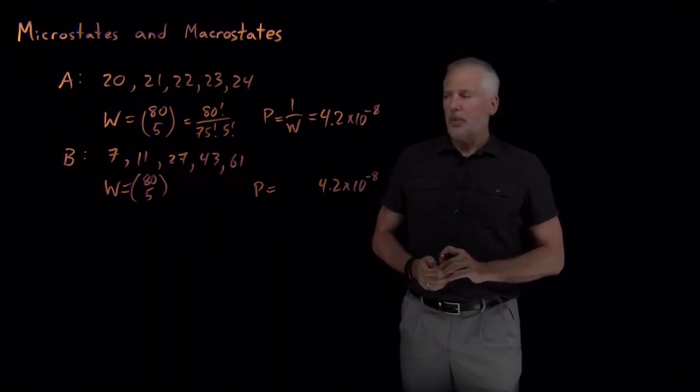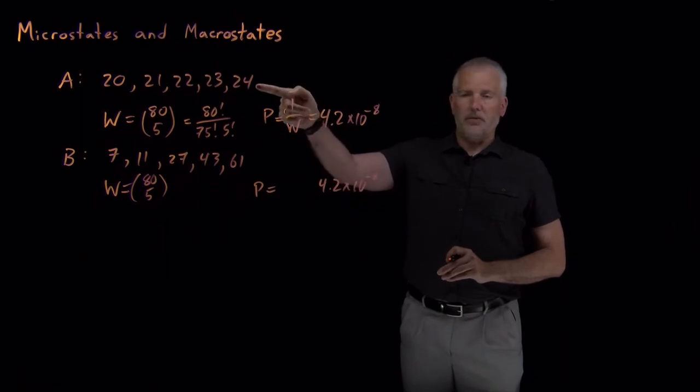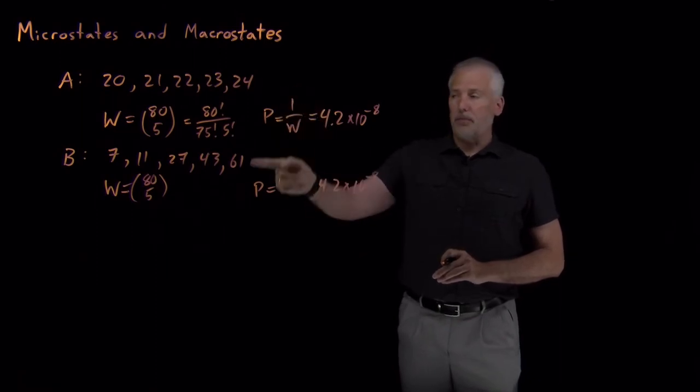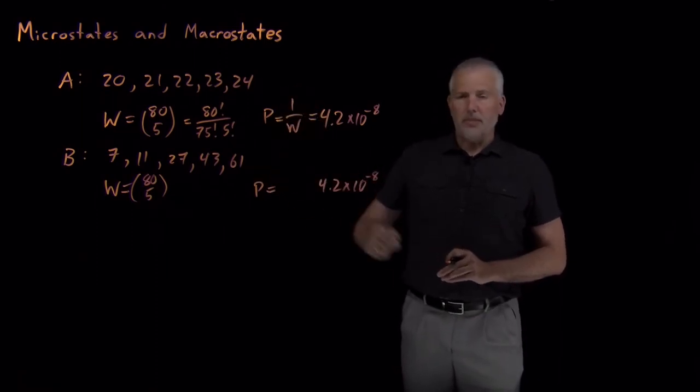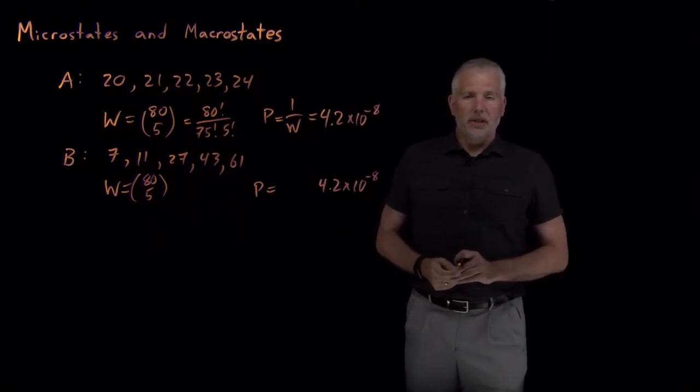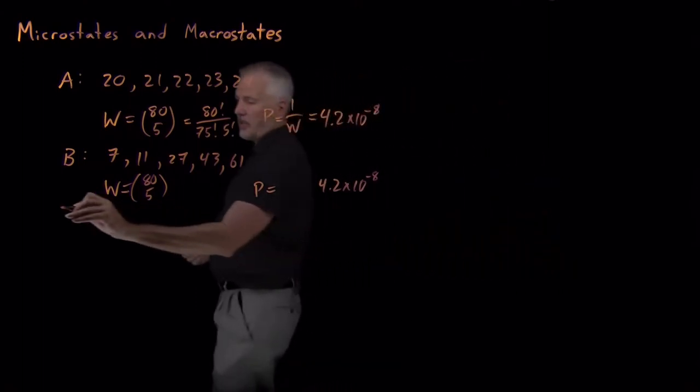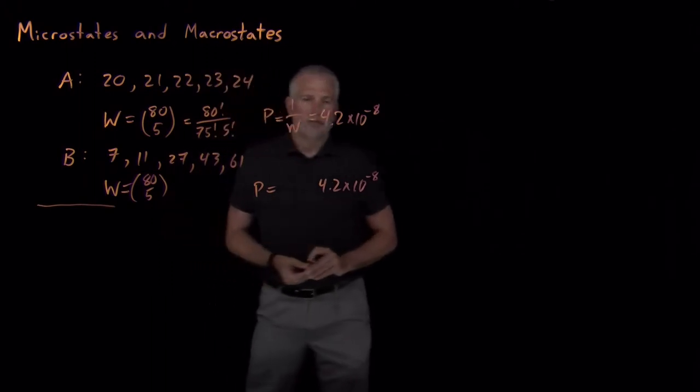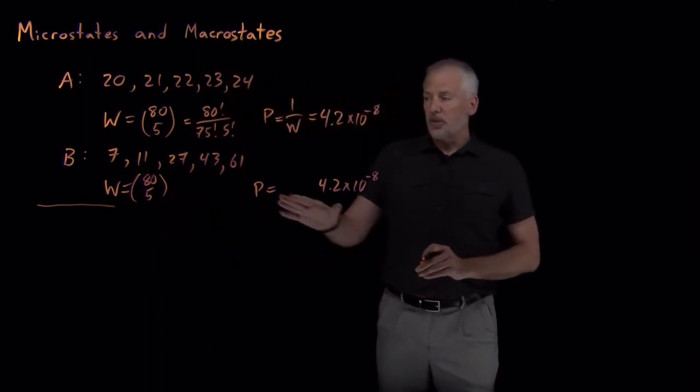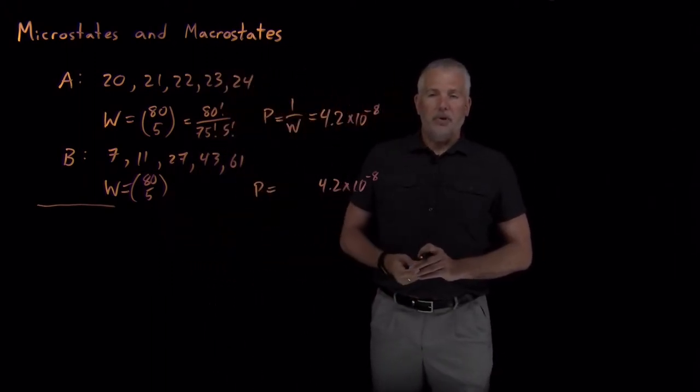All right, so what is the problem here? Why is it that we got the same probability of this unique-looking string of lottery numbers, and for this much more common-looking string of lottery numbers? And the answer to that question is, we haven't been careful enough when we define exactly what we're talking about calculating the probability of.